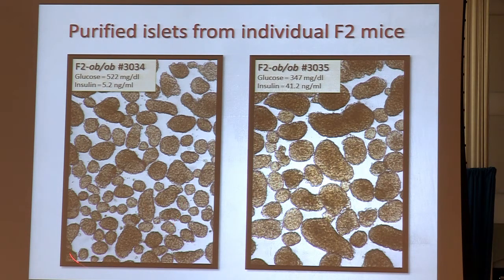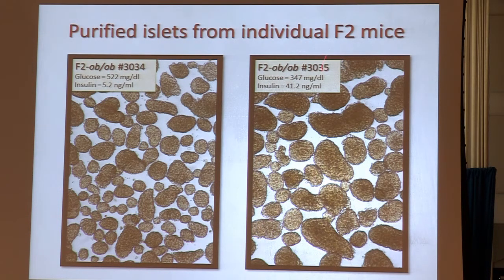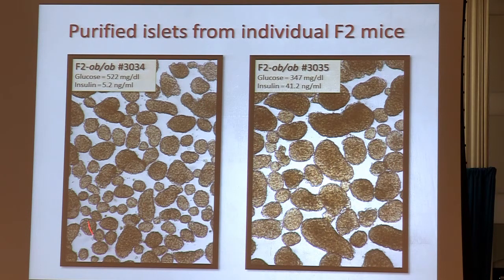These islets are from one F2 animal with very high glucose and low insulin, whereas these islets are from a different F2 — actually a cage mate of that animal. It has lower glucose and much higher insulin. You can just see that these are bigger, juicier — they just look better. When they're pale like this they have a much lower amount of insulin in them.